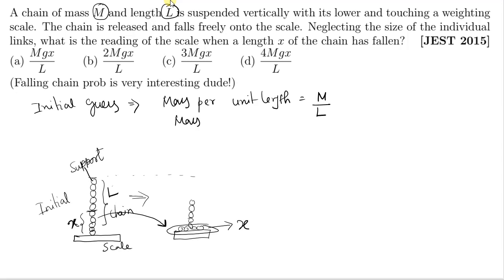Mass of length x is x times M by L. So weight of this is x M by L times g. But that is not the answer. This is just the weight of mass falling.